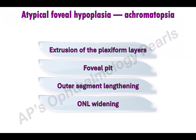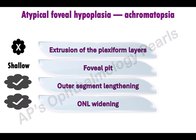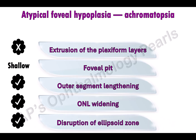The foveal hypoplasia that occurs in achromatopsia is atypical. The first two features are affected; however, outer segment lengthening and outer nuclear layer widening are normal. Instead, there is disruption of the ellipsoid zone indicating photoreceptor degeneration. There is also a significant decrease in retinal thickness and of the outer nuclear layers compared to normals.